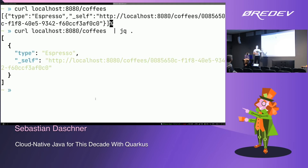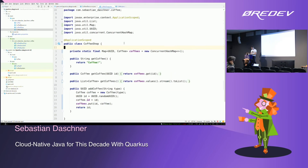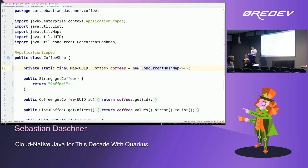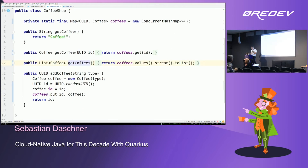That's boring because it stores everything in memory. The coffee shop has a concurrent hash map where everything is stored — it's application-scoped, a singleton. It works, but of course everything is gone once I restart my application.